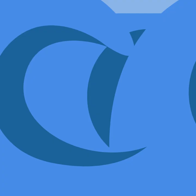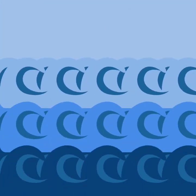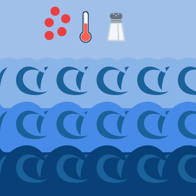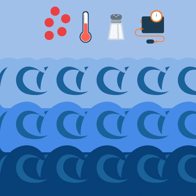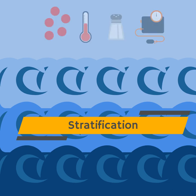In between the depths of the oceans, oceanic layers are becoming more defined. These layers are characterized by differences in water density, temperature, salinity, and pressure — a phenomenon known as stratification.